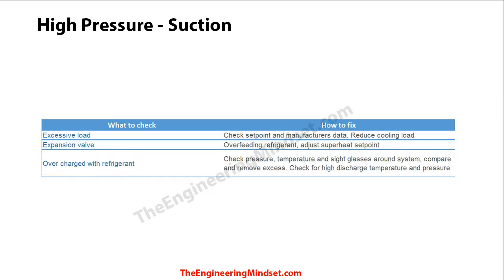For high pressure on the suction line, there are three main causes. The first is excessive load — the cooling load is simply too much for the chiller, so reduce it or spread it across other chillers and cooling equipment. The expansion valve may also be overfeeding refrigerant as it starts to fail — try adjusting the superheat set point first, then replace the valve if needed. Finally, the system could be overcharged with refrigerant; check pressures and temperatures and remove the excess if that's the cause.